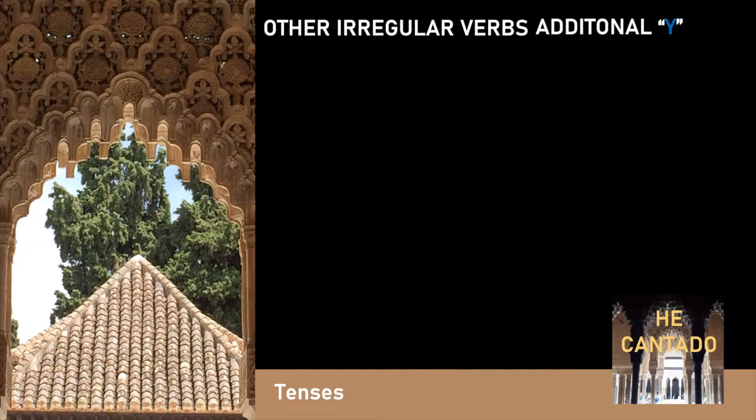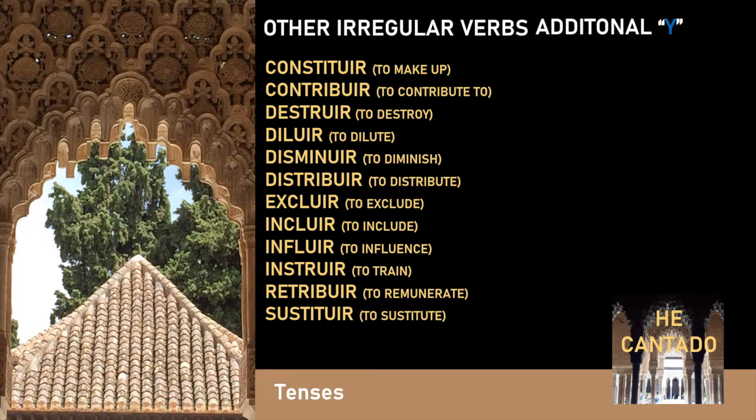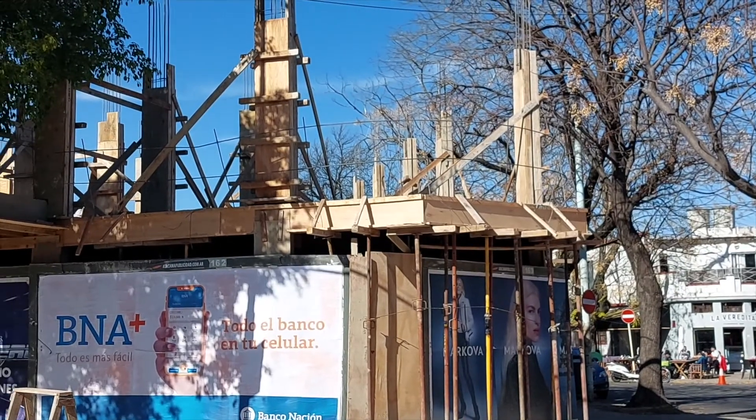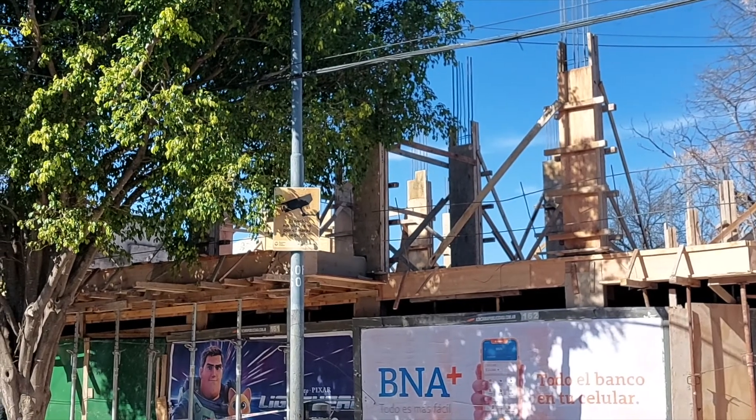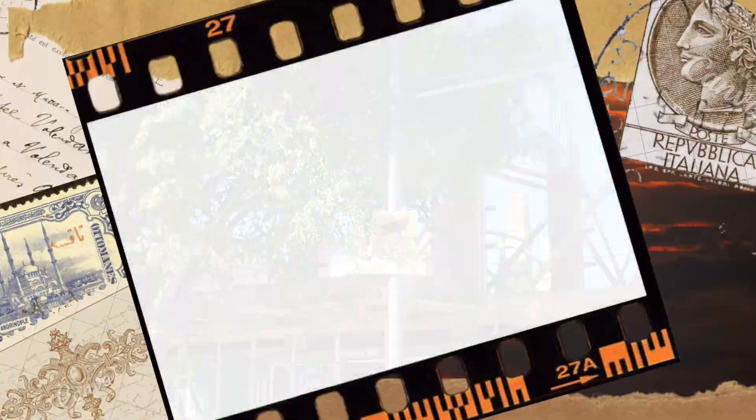The following list includes verbs that are conjugated in the same way by adding a Y in the root. We also have another case in which we are combining the additional G in the first person with the replacement of the E by IE, for example like in the verb tener and in the verb venir.